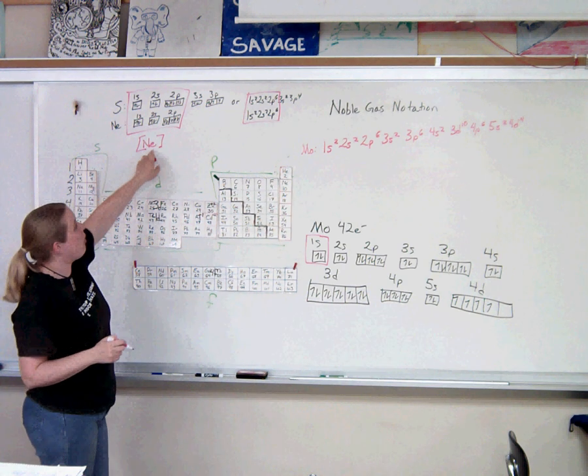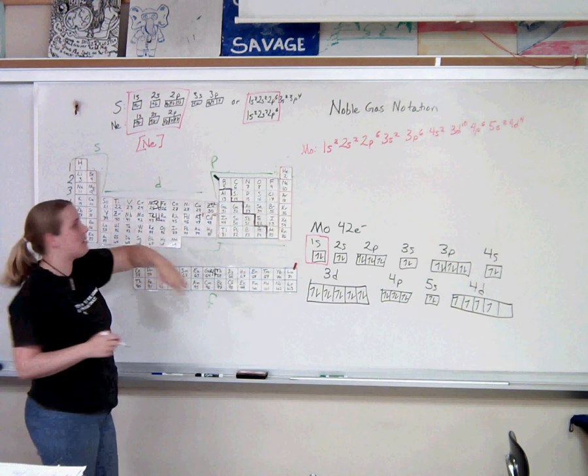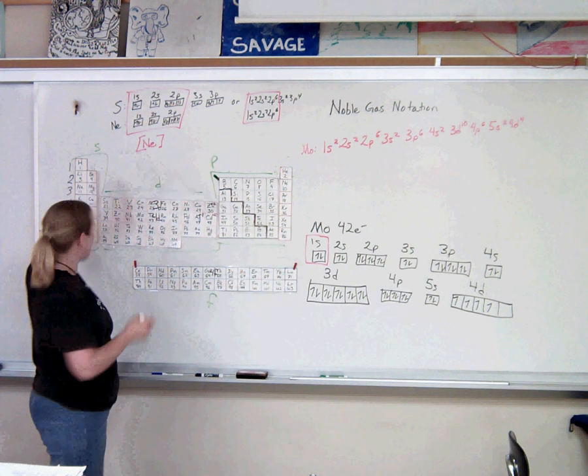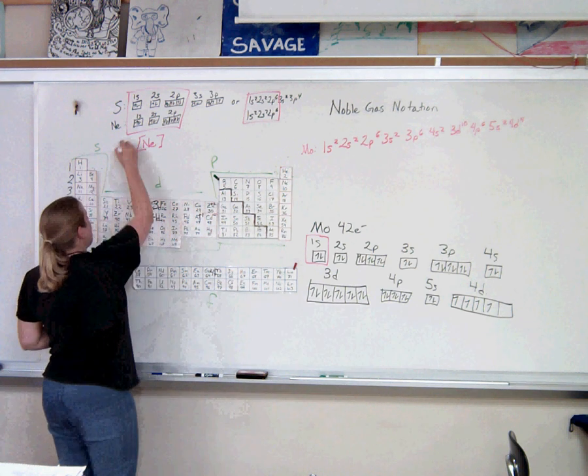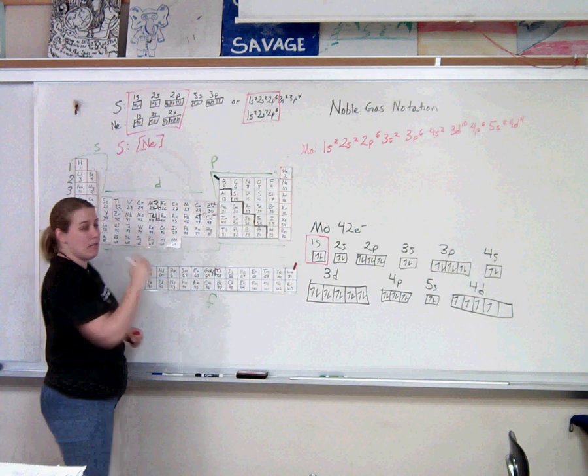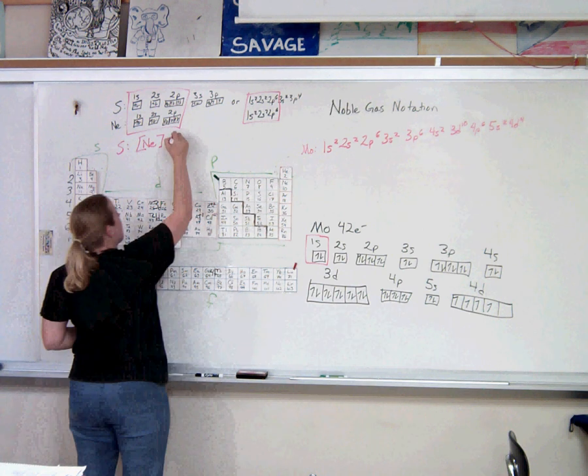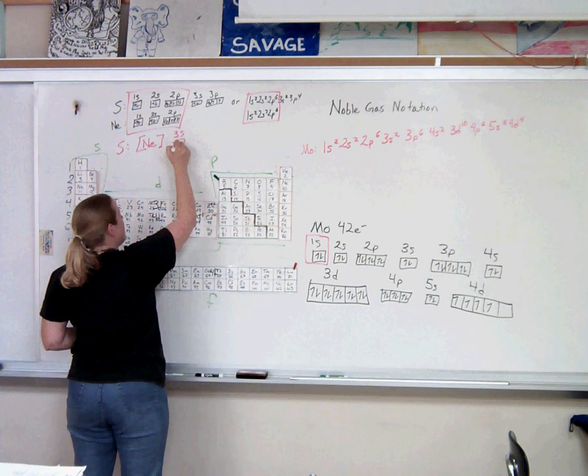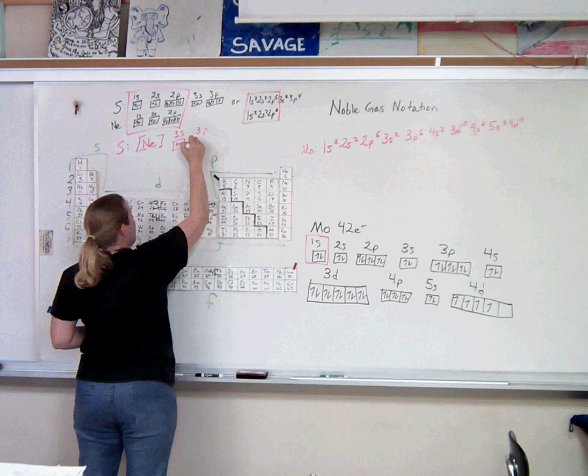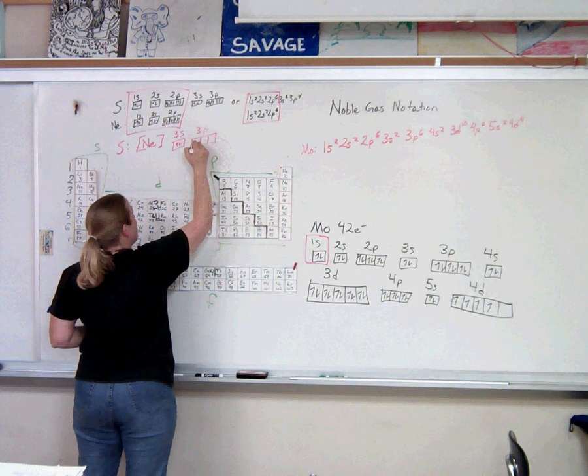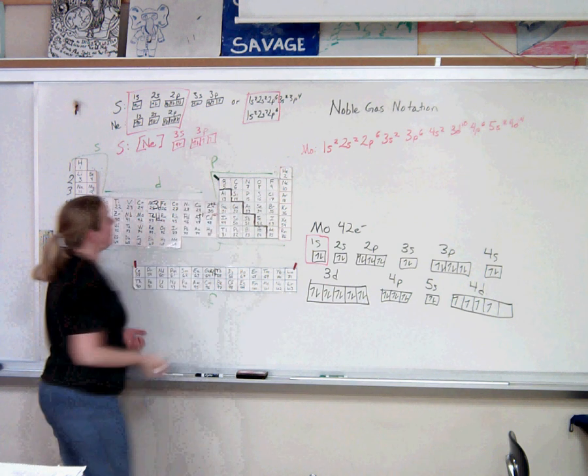Then all we have to do are the valence electrons after neon. So sulfur can be thought of as the element neon plus 3s and 3p. And that's it. That's all you have to do for sulfur.